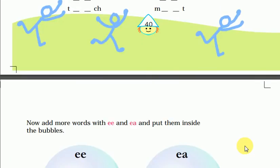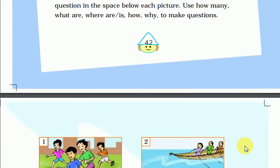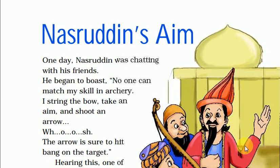So let's talk about our next story — Nasruddin's Aim. One day Nasruddin was chatting with his friend — chat karna matlab baatcheet karna. He began to boast — boast karna matlab dinge maarna, bada chadha kar apni baat kehna. No one can match my skill in archery — koi bhi teer andaazi mein meri skills ki baraabari nahi kar sakta. Archery ka matlab hota hai teer andaazi.